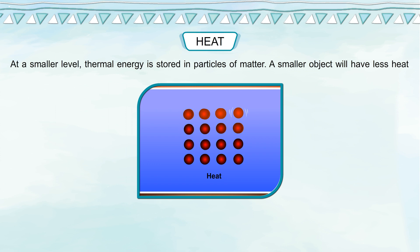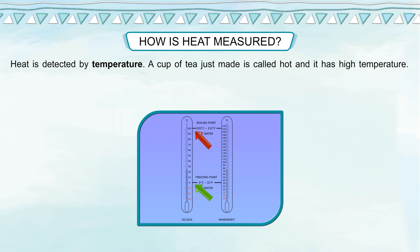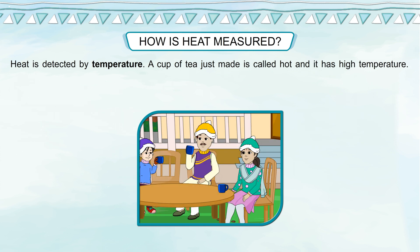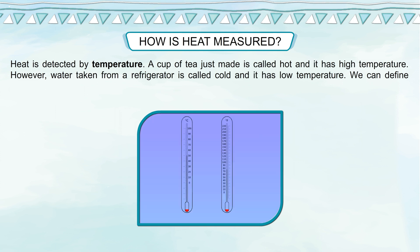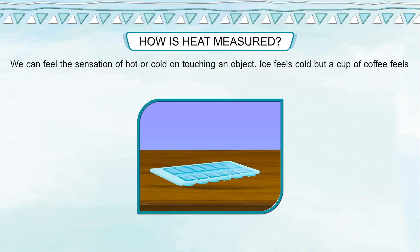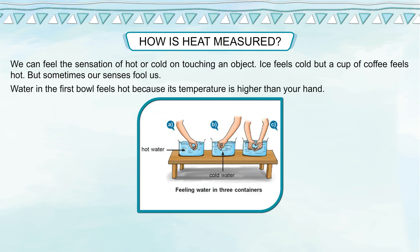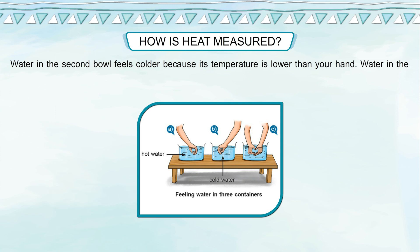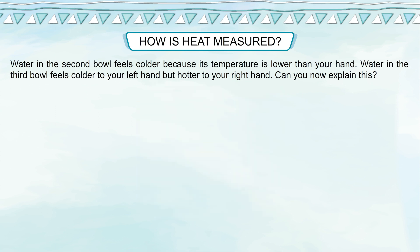At a smaller level, thermal energy is stored in particles of matter. A smaller object will have less heat than a larger object. Heat is detected by temperature. A cup of tea just made is called hot and has high temperature, while water from a refrigerator is called cold and has low temperature. Temperature is defined as the degree of hotness or coldness of a body. We can feel the sensation of hot or cold by touching an object — ice feels cold but a cup of coffee feels hot. However, sometimes our senses fool us: water in the first bowl feels hot because its temperature is higher than your hand, water in the second bowl feels colder, and water in the third bowl feels colder to your left hand but hotter to your right hand.